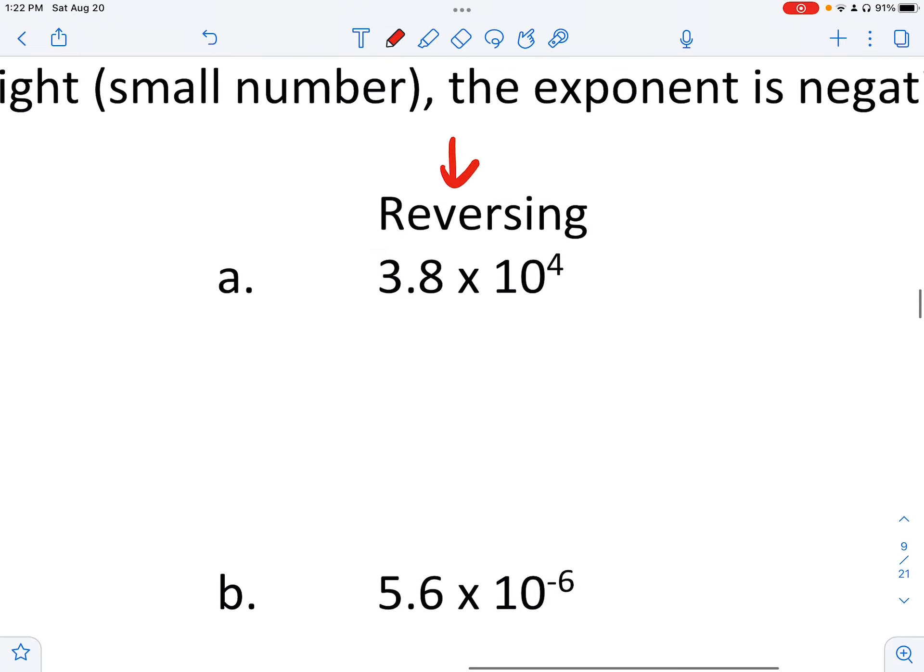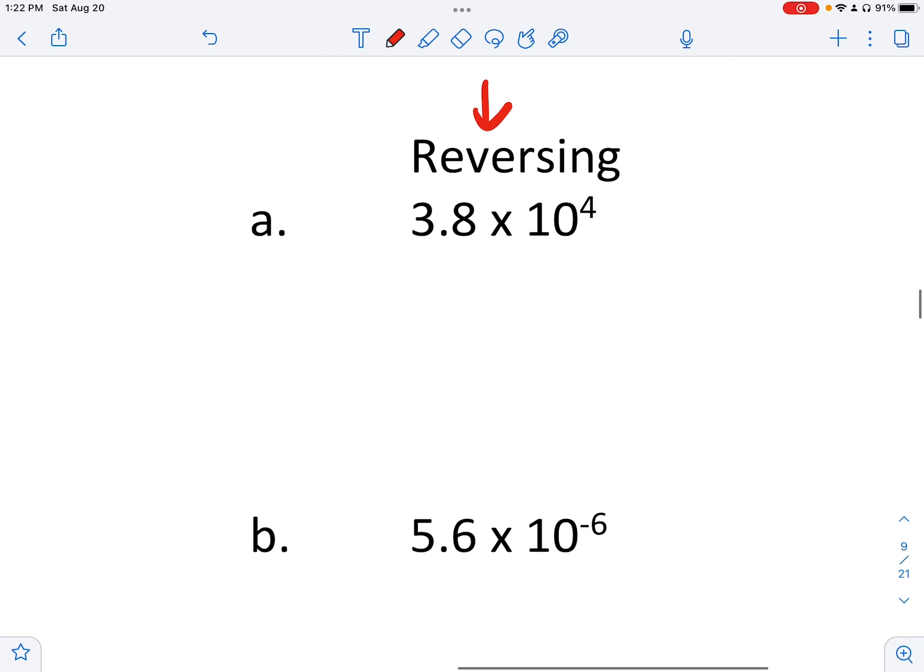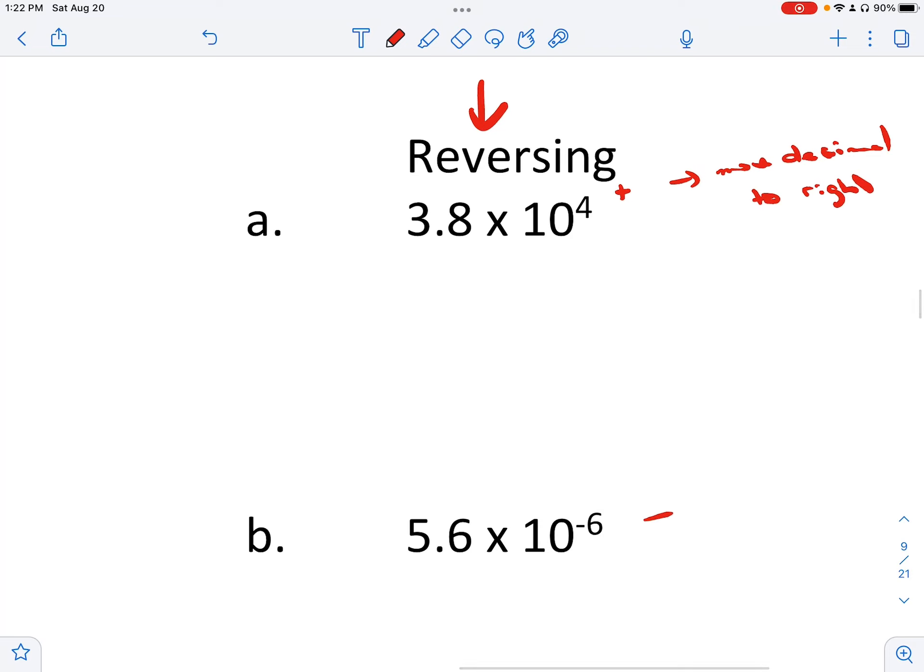Let's flip over here. Now reversing it. How do we take it out? We kind of just reverse it. If we have a positive number we're going to move the decimal to the right, making it a big one. If we have a negative one we're going to move the decimal to the left. And all we have to do is just listen to whatever our number says.